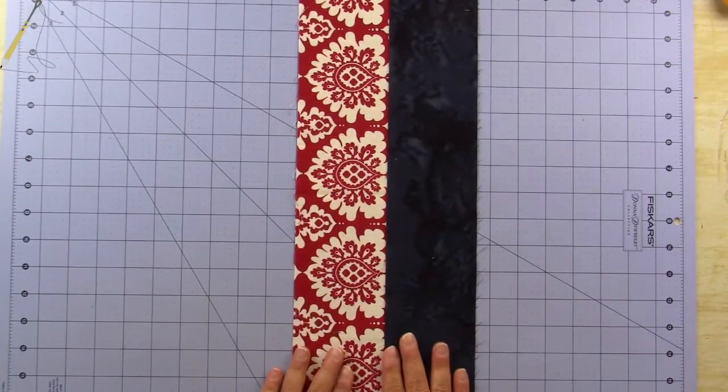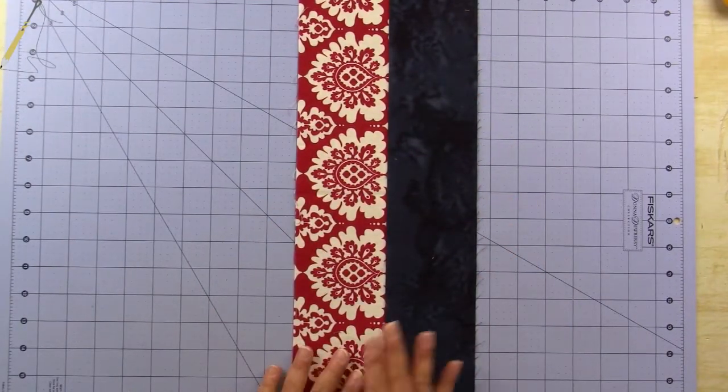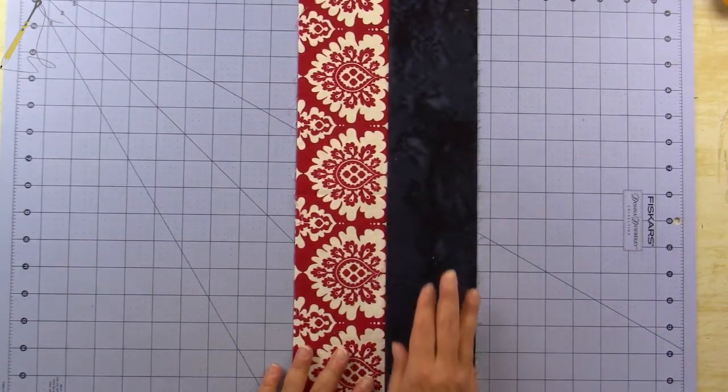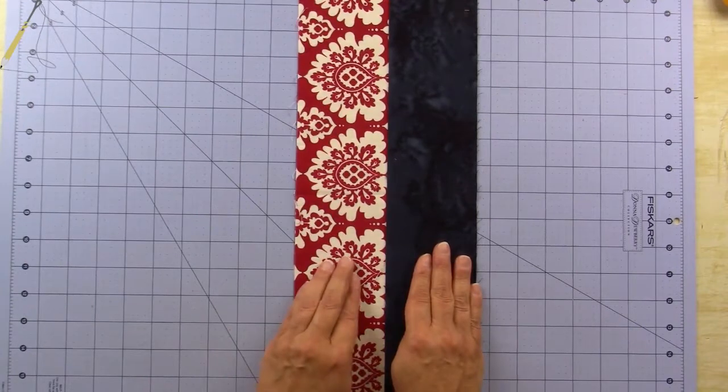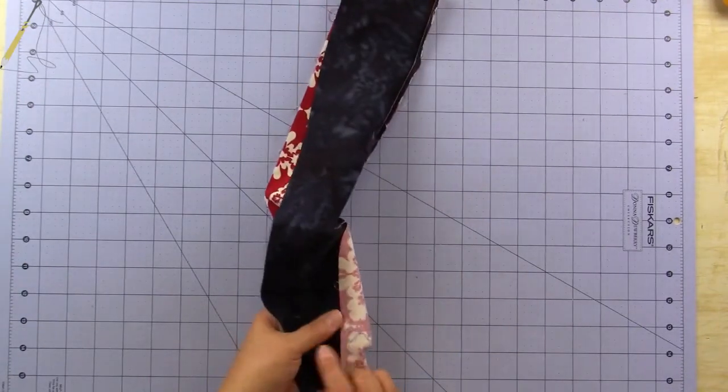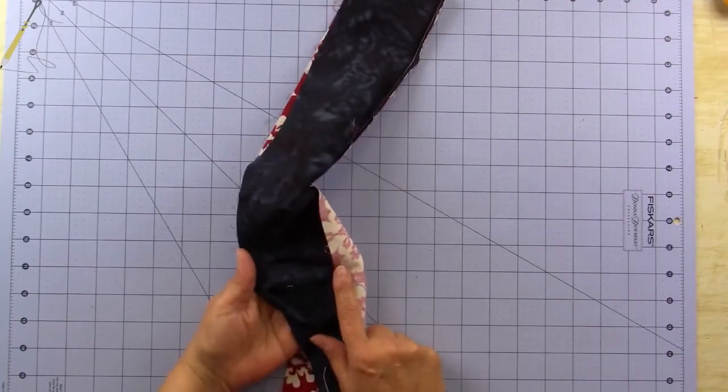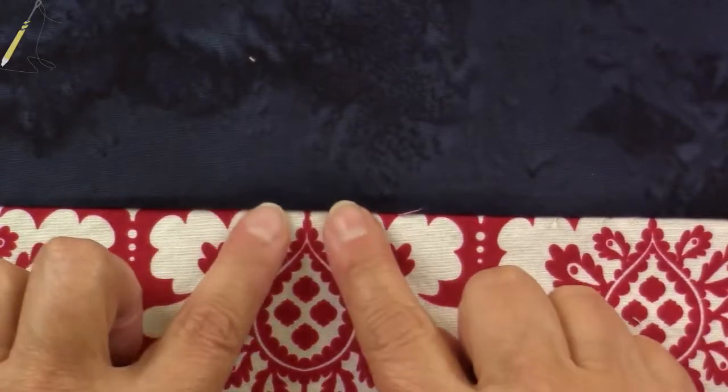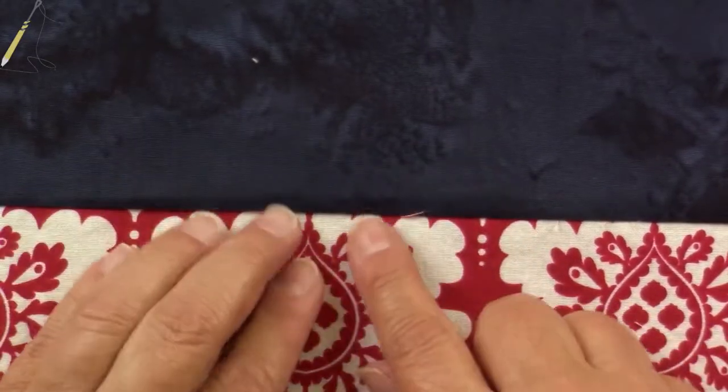If for some reason you come out smaller or larger, check that the strips were cut accurately at three and a half inches, and check that your seam allowance is an accurate quarter of an inch. And the last thing, check that you pressed it correctly.